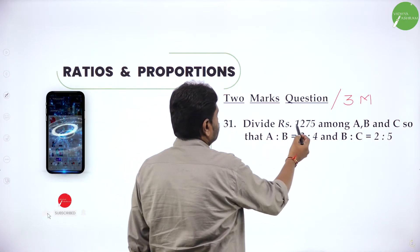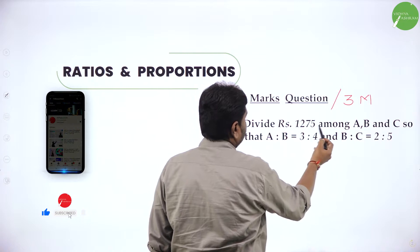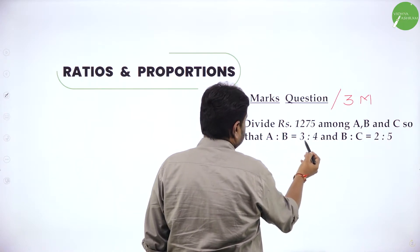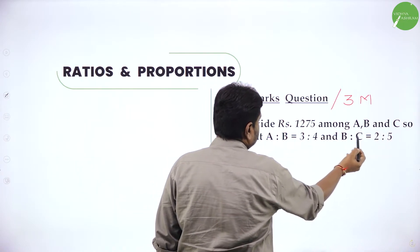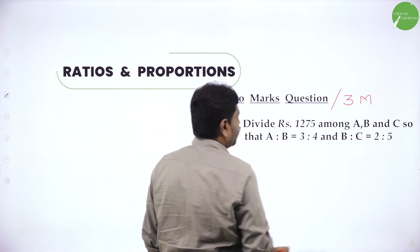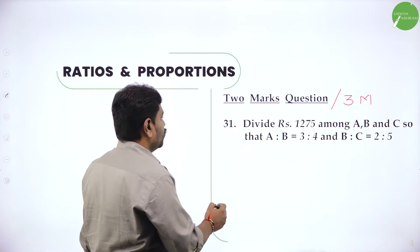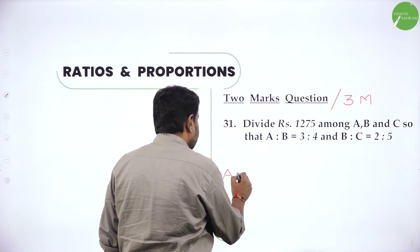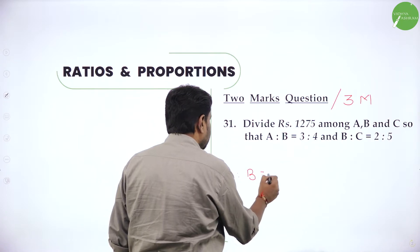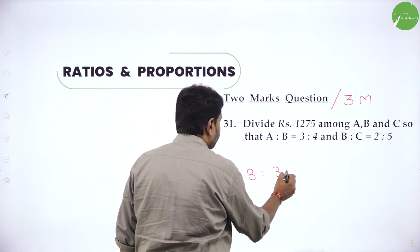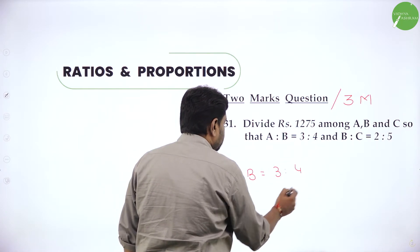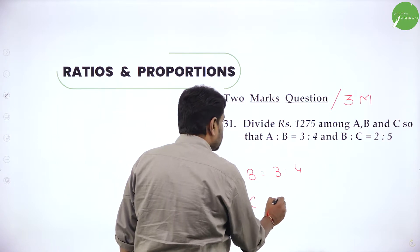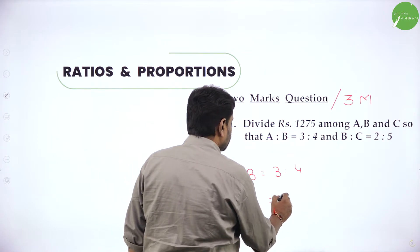So now divide rupees 1,275 among A, B and C so that A is to B is 3 is to 4 and B is to C is 2 is to 5. So now observe — they gave A is to B. What is A is to B given? A is to B is 3 is to 4. And B is to C — what is B is to C given? B is to C is 2 is to 5.